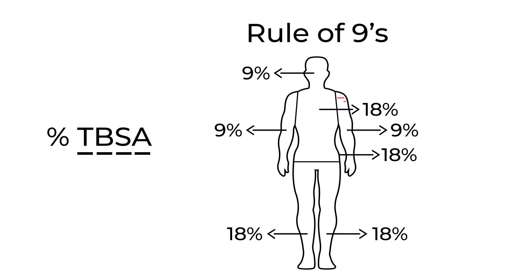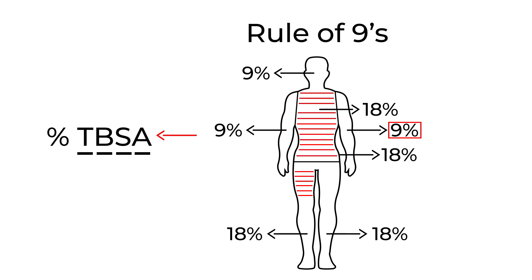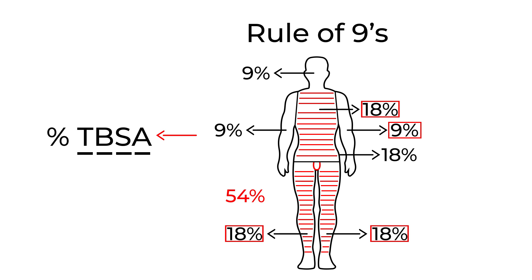For example, if a patient burned their entire arm on one side, the total body surface area is simply 9%. If somebody's entire front part of their body is burned including both legs, it would be 18 plus 18 plus 18, which is 54%. There's one final part — the genital area — which is given 1%. When you total all parts up, it comes to 100%.